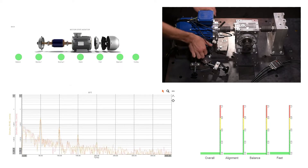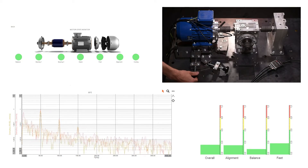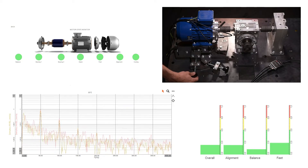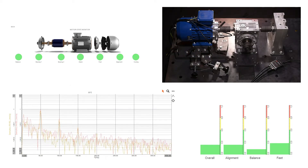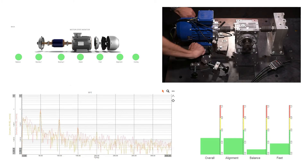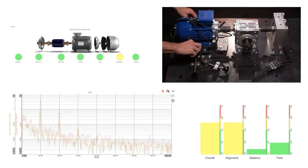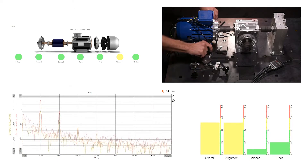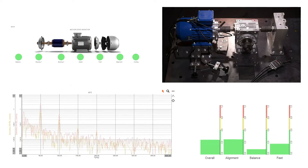In order to move the motor, we need to first unscrew it from the base. As expected, the noise floor immediately increases. We are moving the motor in the direction perpendicular to the shaft, creating a parallel misalignment between the motor and the gearbox. The position of the motor was horizontally changed by 3 mm and the system immediately detected the misalignment. As you can see, the amplitude and the frequency of the motor rotational speed increased in axial direction.